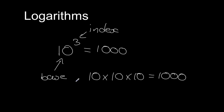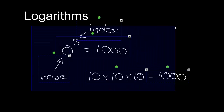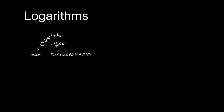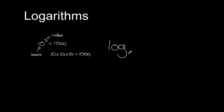Hopefully nothing too revolutionary there. Now, if we want to write this out as a logarithm, all a logarithm is is another way of writing this expression out. So what we could say is that log base 10 of 1000 equals 3. In our first notation, it's the base raised to the index equals 1000. When we write it as a logarithm, we're asking: what number do I need to raise 10 to in order to get to 1000? And the answer is 3.